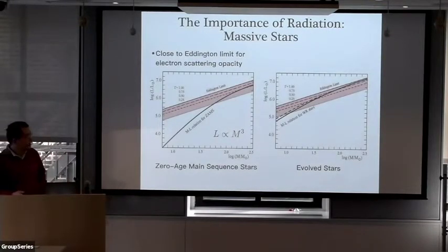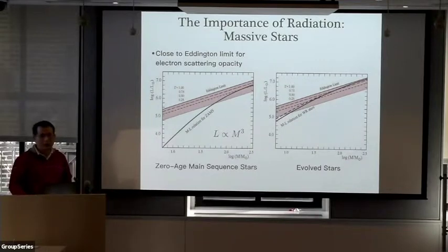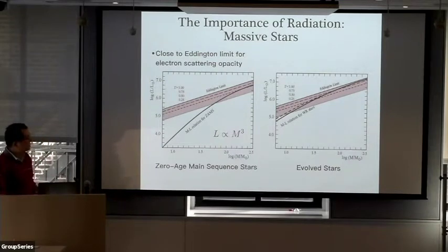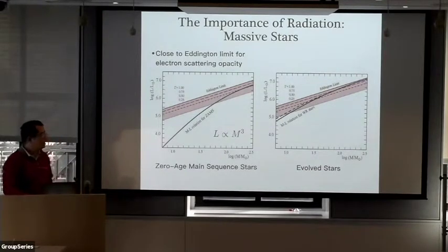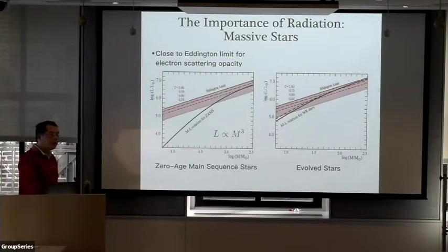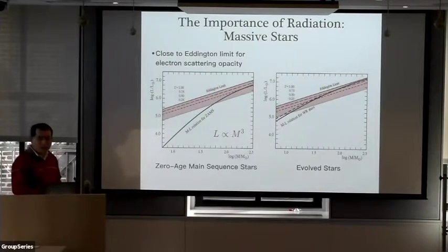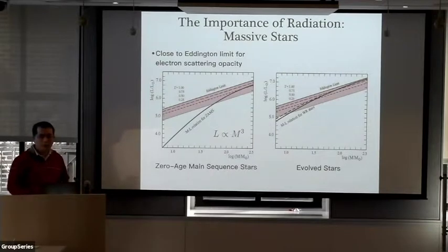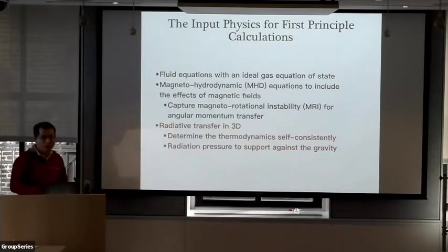Radiation is also very important for massive stars. For zero-age main sequence stars, because luminosity increases rapidly with mass, when you go to stars of hundreds of solar masses, you can easily get the Eddington ratio more than 50% in the envelope. For Wolf-Rayet stars after the main sequence, you can easily reach above 75% Eddington. If you consider all other opacities, you can easily become super-Eddington. That makes radiation play an important role in determining what you see for luminous blue variables or the properties of outflows from Wolf-Rayet stars.